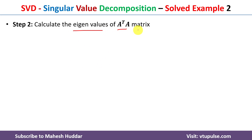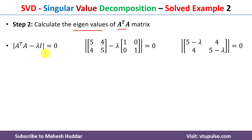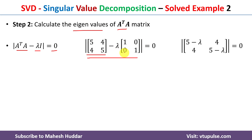In the second step, we calculate the eigenvalues of the A-transpose·A matrix. The eigenvalues are found using the equation: determinant of (A-transpose·A − λI) = 0, where I is the identity matrix. Substituting A-transpose·A and λI = λ[1 0; 0 1], we get the matrix [5−λ, 4; 4, 5−λ], and its determinant is set equal to zero.